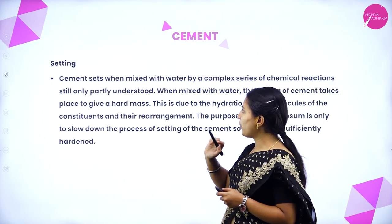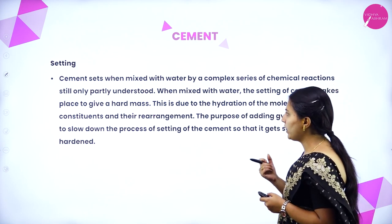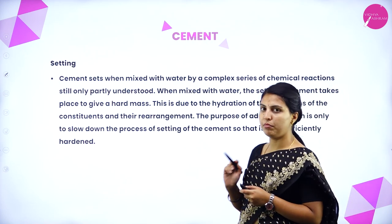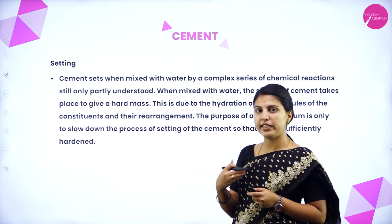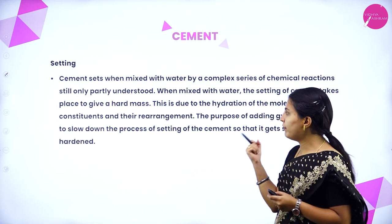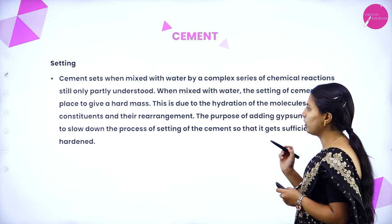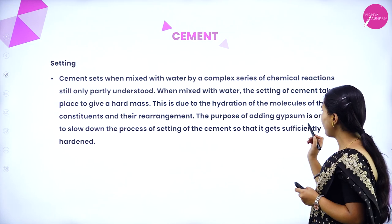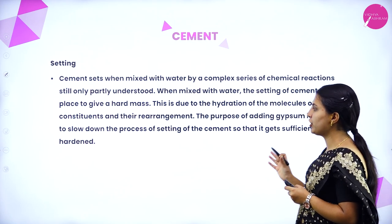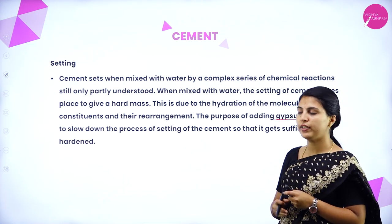When clay and lime are strongly heated together, they fuse and react to form cement clinker. This clinker is mixed with 2 to 3 percent by weight of gypsum to form cement. Important ingredients in Portland cement are dicalcium silicate 26%, tricalcium silicate 51%, and tricalcium aluminate 11%. Cement sets when mixed with water through a complex series of chemical reactions, forming a hard mass. Gypsum is added to slow down the setting process so that the cement gets sufficiently hardened.